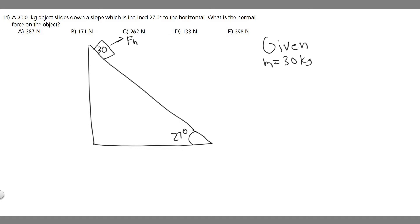So we have this object, we know its mass is 30 kilograms and it's gonna be on a 27 degree slope. What we're gonna be doing is solving for the normal force, so we're trying to find F sub n.